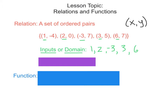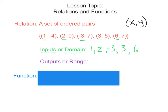The second term goes along with our Y values, and those terms are outputs or range. So our outputs are all of our Y values: negative 4, 0, 7, 5. You'll notice that 7 appears again — we do not need to list that 7 again. We don't have to repeat it. So these are all of the outputs we have, which is then called our range.